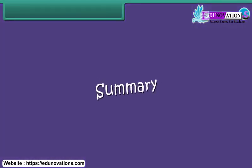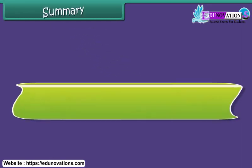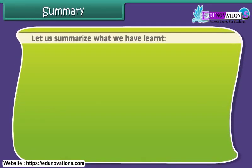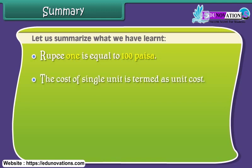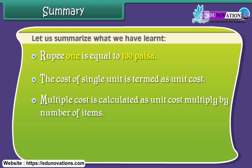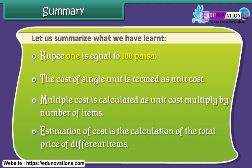Summary. Let us summarize what we have learnt. Rupee 1 is equal to 100 paisa. The cost of a single unit is termed as unit cost. Multiple cost is calculated as unit cost multiplied by number of items. Estimation of cost is the calculation of the total price of different items.